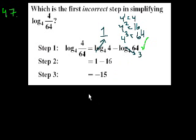So this should be log of 4 minus 64. This should be a 3 here. This should be a minus 3. So this step 2 was the first incorrect step. They mis-evaluated log base 4 of 64. They thought it was 16 for some reason. I guess they divided 64 by 4. But it's actually 4 to the third power is 64. So the answer there is 3. So step 2 is the first incorrect step.